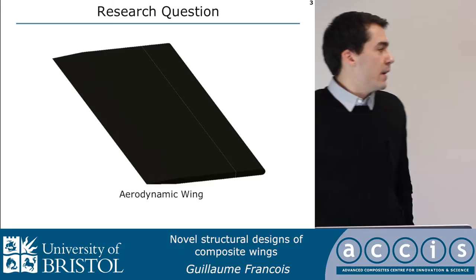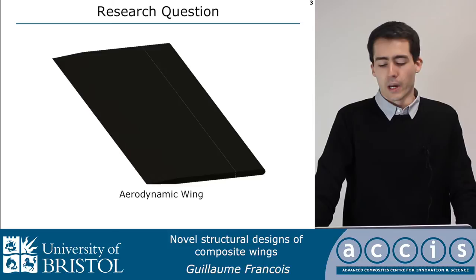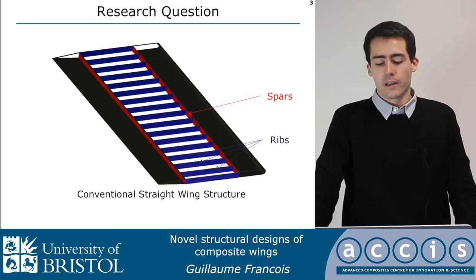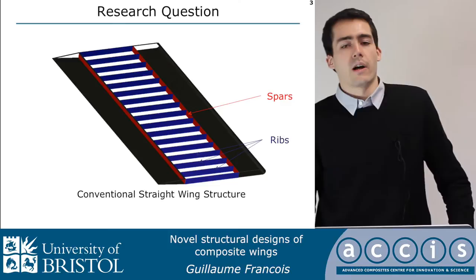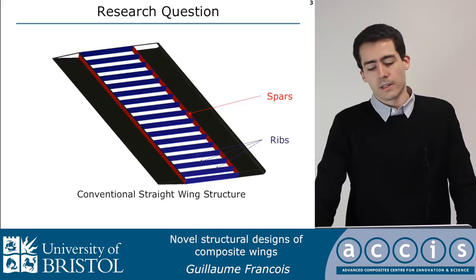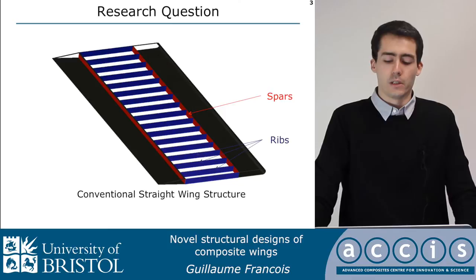When you look at an aircraft, what you get to see is the aerodynamic wing, and within that wing there is a structure which is here to carry the loads to the aircraft. Conventional wing structures are made of straight elements and include straight spars and straight ribs. There are also straight stringers, but that is not the subject of this research, so I'm mainly focusing on spars and ribs.